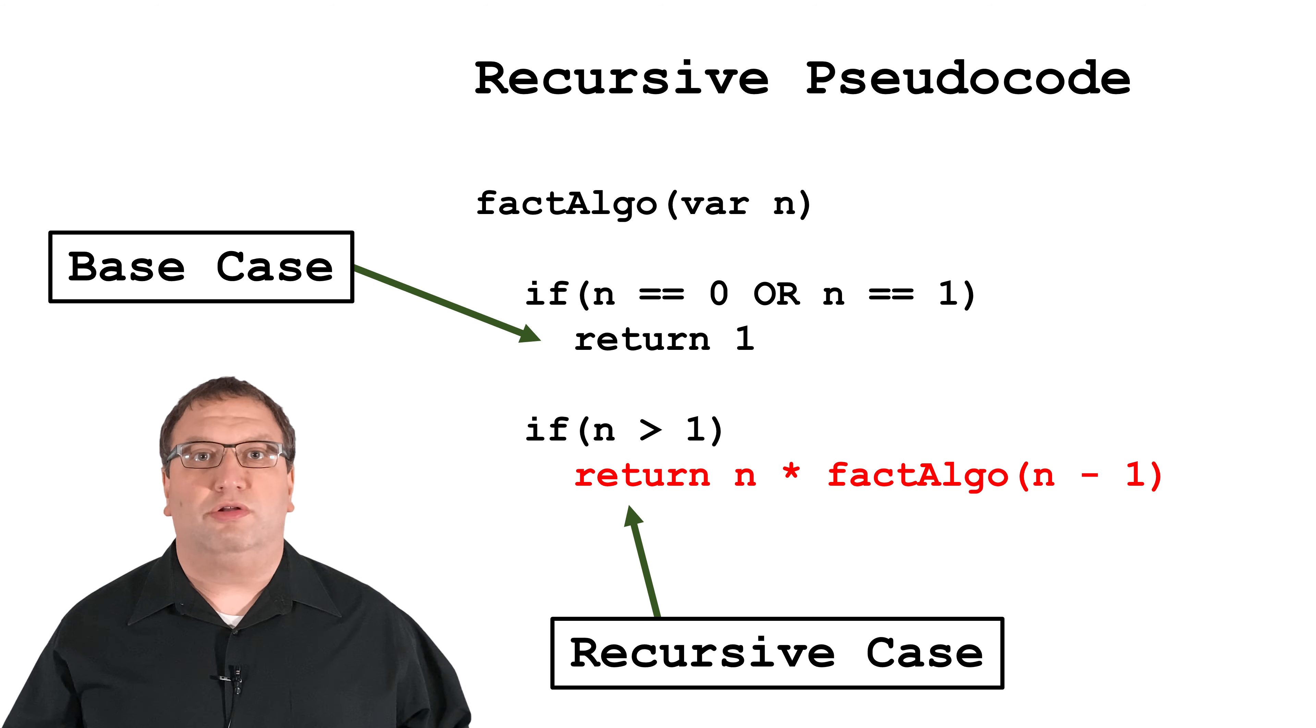So that's how a computer executes a recursive program. Let's go back and look at the pseudocode again. Notice that each time we make a recursive call, it's getting closer to the base case.